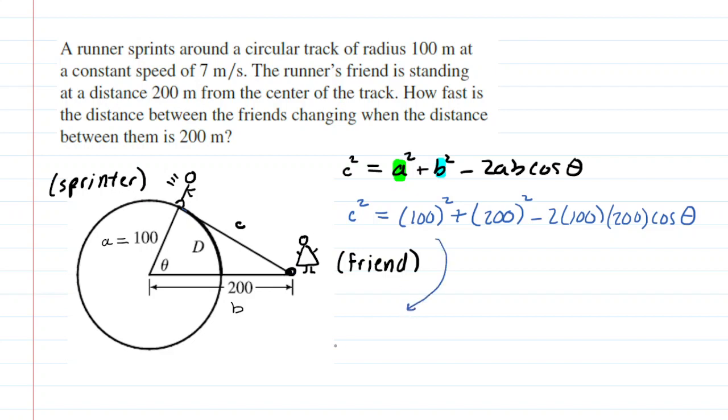Now we're going to swing down here and simplify this equation. We have c squared equals. Now pick up your calculator and do 100 squared plus 200 squared. You'll get 50,000. And then we have minus and then just multiply 2, 100, and 200 and you'll get 40,000. And then again, times the cosine of theta.